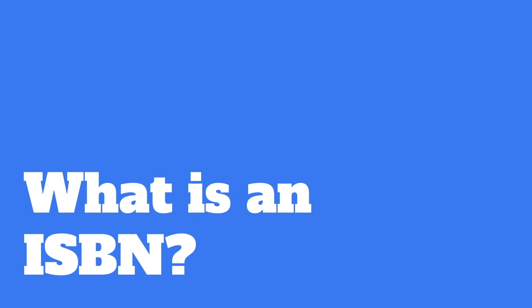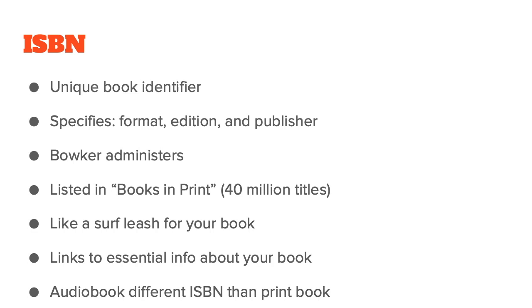Let's talk about ISBNs. We all know what they are and what purpose they serve, but let's go more in depth about how they actually work and what they cost. They're unique book identifiers. The specs give the format, the edition, the publisher — bibliographic information that people can look up in the Bowker database. If I have an ISBN-13 number, it leads back to the publisher like an enormous breadcrumb. Bowker administers the identifiers website, and you get listed in Books in Print, which has 40 million titles and comes out every year. Think of an ISBN like a surf leash for your book.